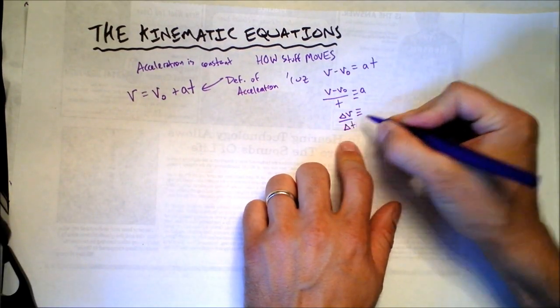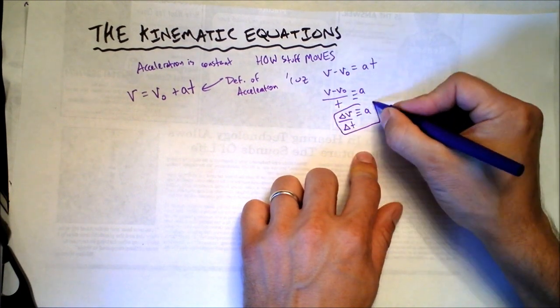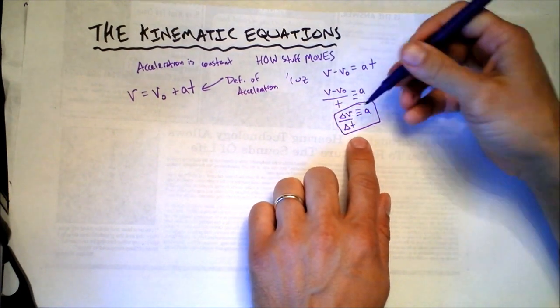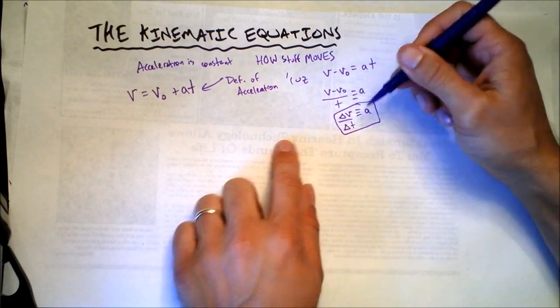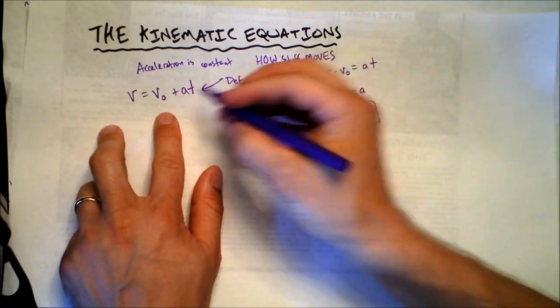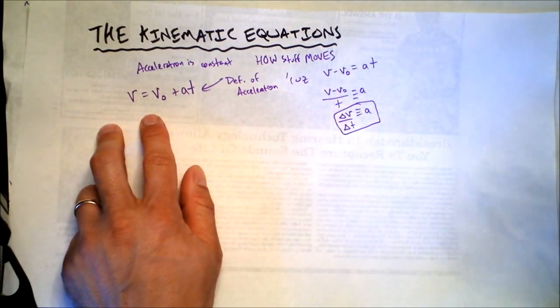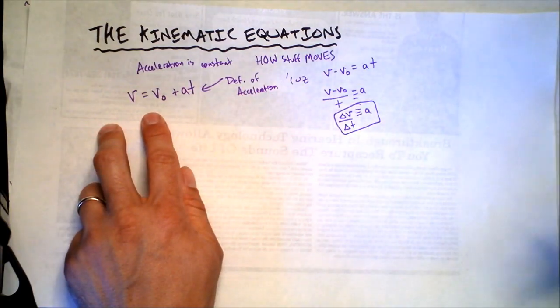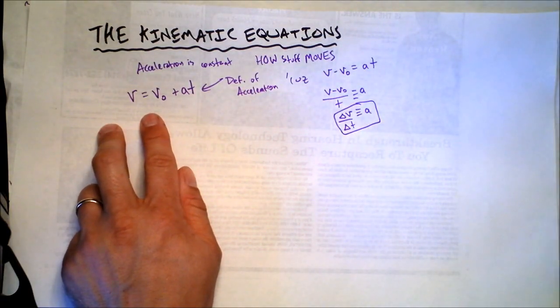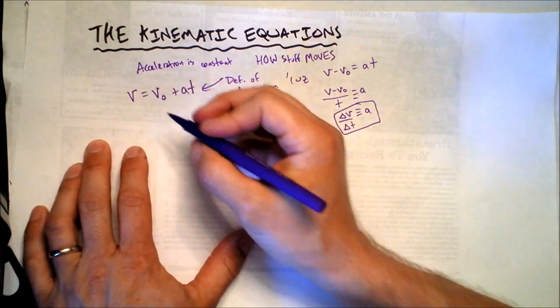That's what acceleration means. It is the slope of the velocity versus time graph. When you see this equation, think of the definition of acceleration. The books usually present it like this because it's more useful for finding how fast you're going. The next equation we're going to address is what I call the definition of average velocity.